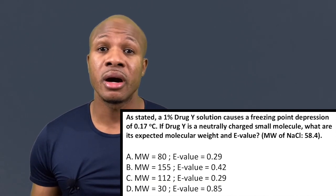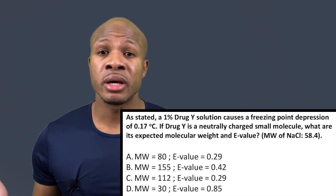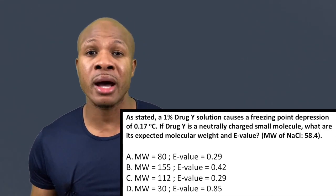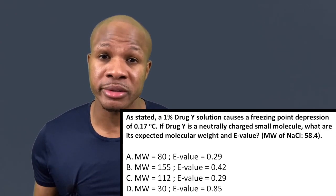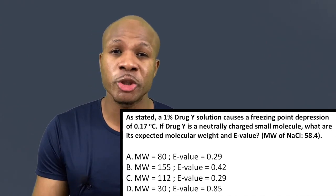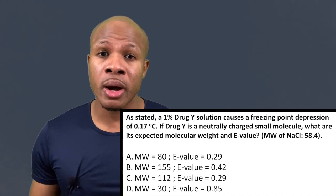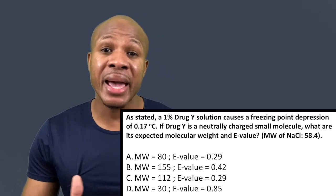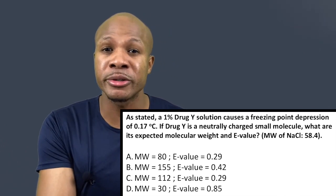This is a continuation of the previous problem. First we need to know what molecular weight and E value are. Molecular weight means you would weigh out 58.4 grams of sodium chloride to have one mole of sodium chloride particles. E value is the mass of sodium chloride that is equivalent to one gram of another compound — if one gram of drug Y results in a certain number of particles, what mass of sodium chloride results in the same number of particles? That mass is the E value.